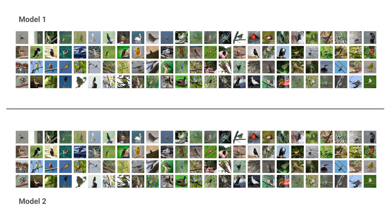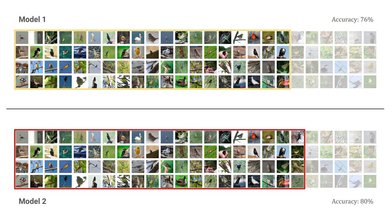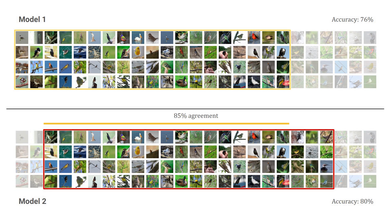Consider a case where two models are trained to predict bird species. The first model achieves 76% accuracy with correct predictions on one subset of the data, and the second achieves 80% accuracy with correct predictions on another subset. In the case shown here, the two models agree perfectly except for a few errors in Model 1 that are corrected by Model 2. But it's also possible that the models agree less in their predictions, but still largely overlap.